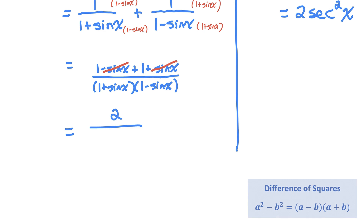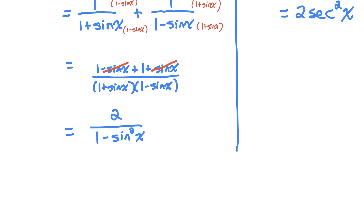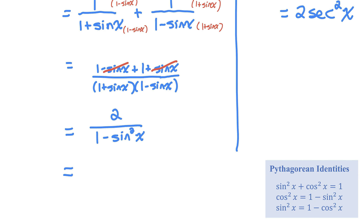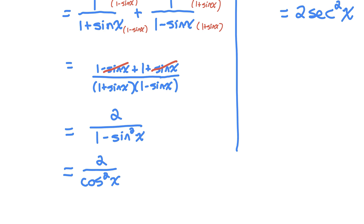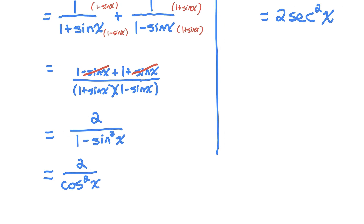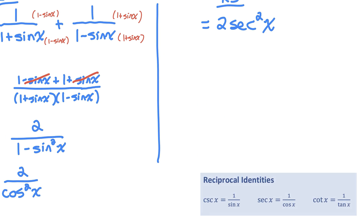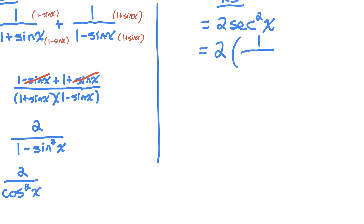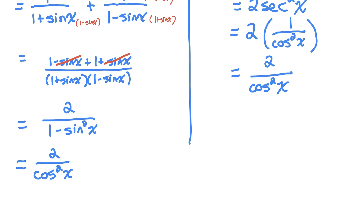In the denominator, I have a difference of squares: 1 plus sine times 1 minus sine is just 1 squared minus sine squared, which I could write as 1 minus sine squared x. Based on the Pythagorean identity, 1 minus sine squared x is equal to cosine squared x. And on the right side, secant is the reciprocal of cosine, so I can replace secant squared x with 1 over cosine squared x. That leaves me with 2 divided by cosine squared x, which is exactly equal to the expression on the left side. Left side equals right side — we're done the proof.